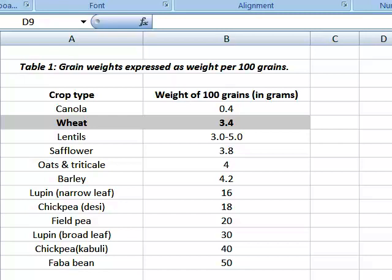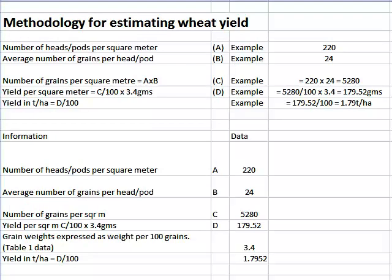Let us talk through all the inputs. The number of heads per square metre is Input A. In our example, we will assume there were 220 heads per square metre. We collected a number of heads and calculated the number of grains — the average of these was 24, which is Input B. Input C, the number of grains per square metre, is A times B: 220 times 24, giving us 5,280 grains per square metre.